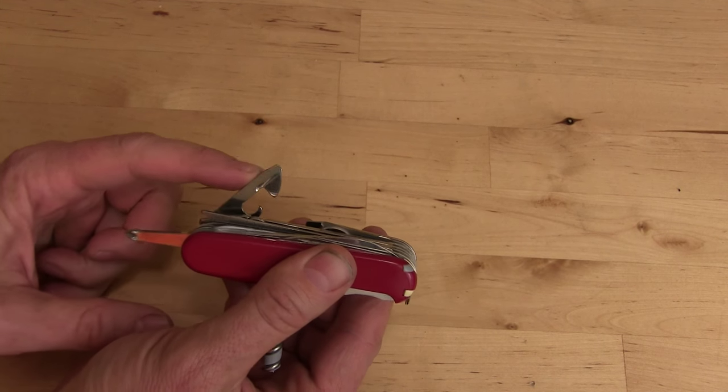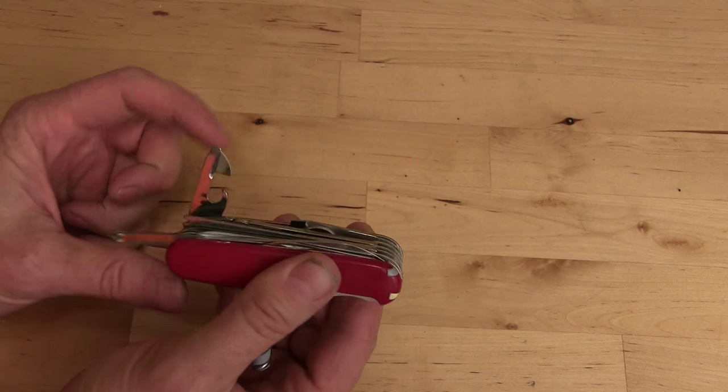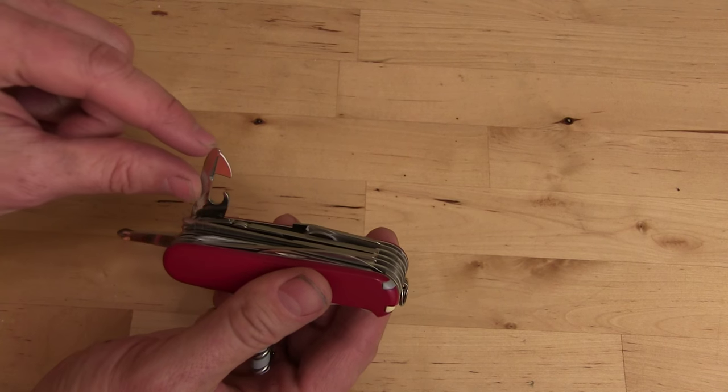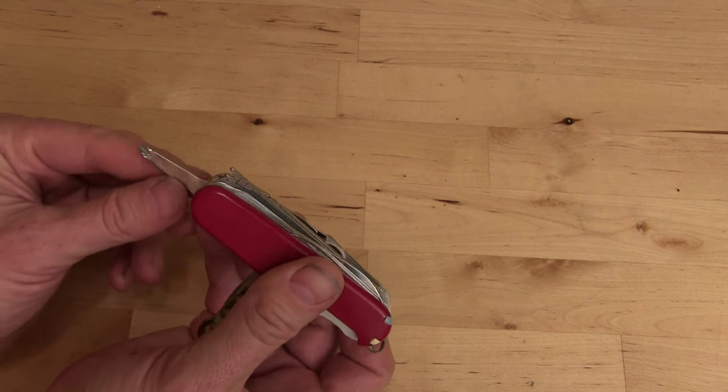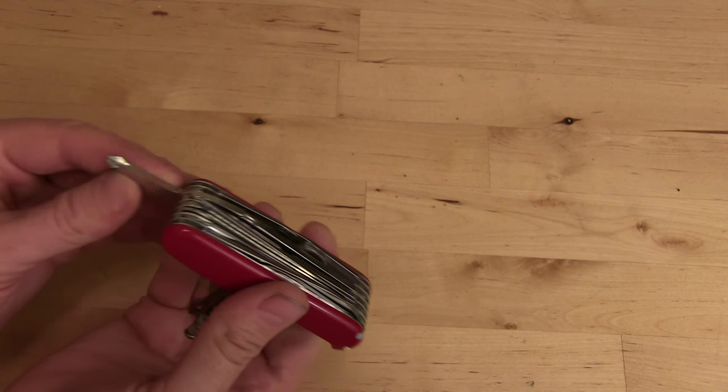Can opener. Does that have any other functions? Nope. A screwdriver blade on the end of it counts as a tool as well. Then you've got your Phillips screwdriver on this end.